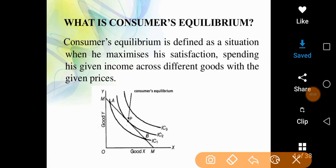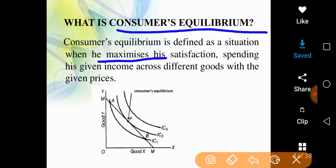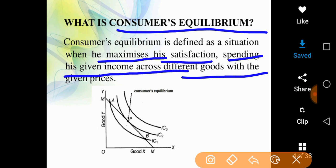Hello students, today I am telling you what is consumer equilibrium. Consumer equilibrium is defined as a situation when the consumer maximizes his satisfaction spending his given income across different goods at given prices. Consumer equilibrium is the situation where the consumer has a given budget line and spends income on two different commodities such that the maximum satisfaction level is achieved.